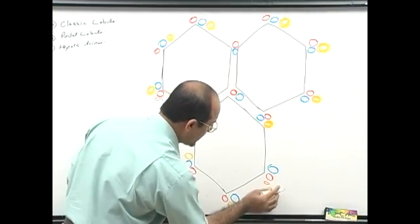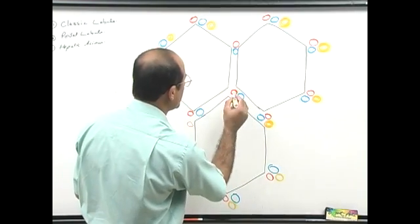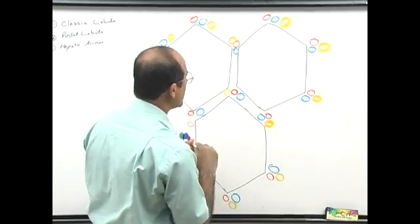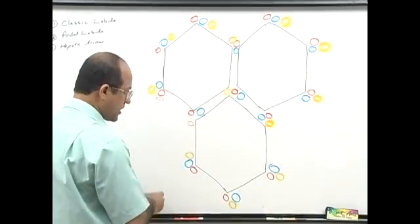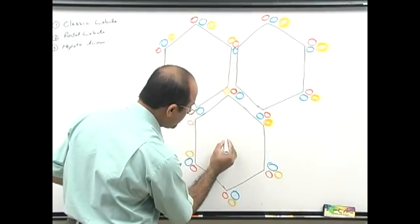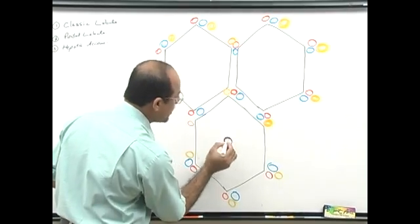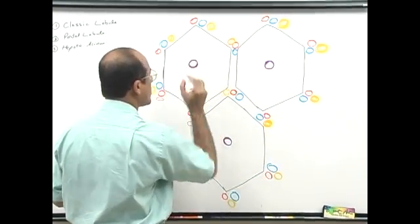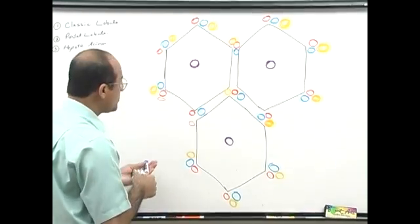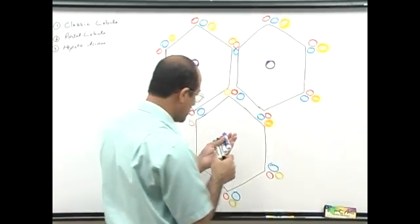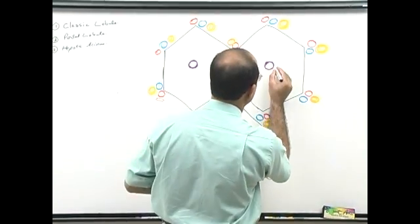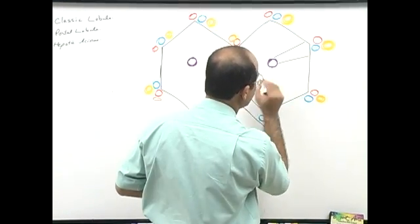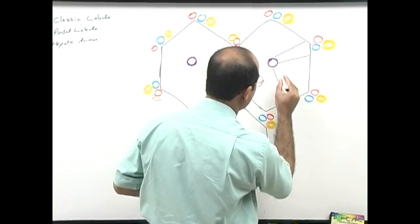This is the portal triad, but actually there are always lymphatics also in this area. Now you will tell me what is this in the center — the central vein. And now we will come back to our arrangement: what was coming from here? Sinusoids. I will just draw two sinusoids.